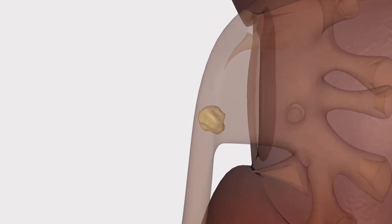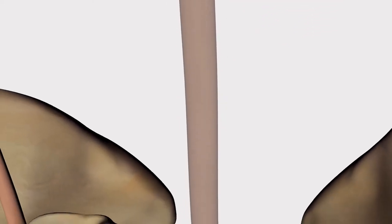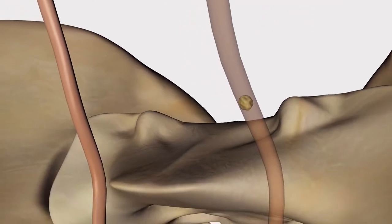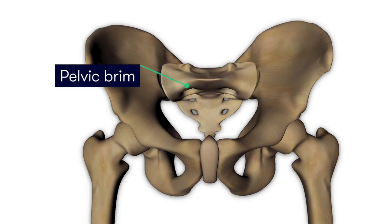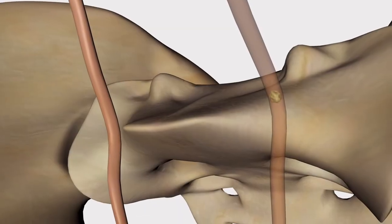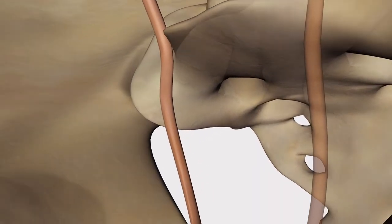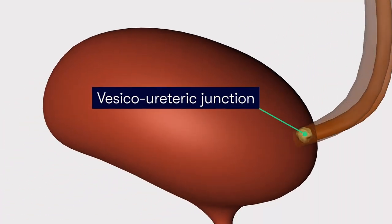Then moving inferiorly, the next common location to find a stone is in the distal ureter at the point at which it narrows as it crosses the pelvic brim. The pelvic brim is the edge of the pelvic inlet and marks the opening into the lesser pelvis in which we find the urinary bladder. And the final common location for urinary tract stones is at the point where the ureter enters the bladder, and we refer to this as the vesico-ureteric junction, or VUJ.